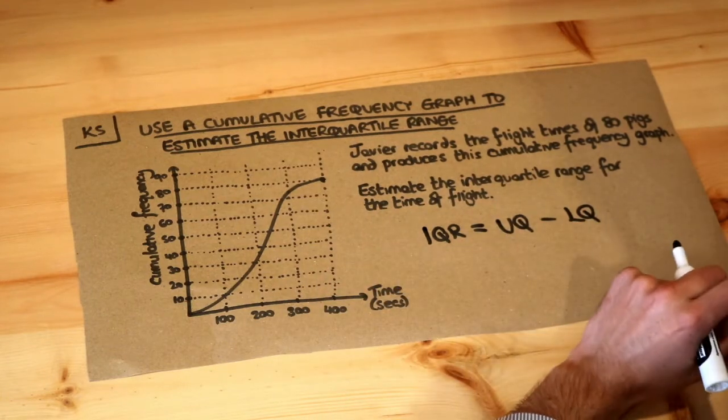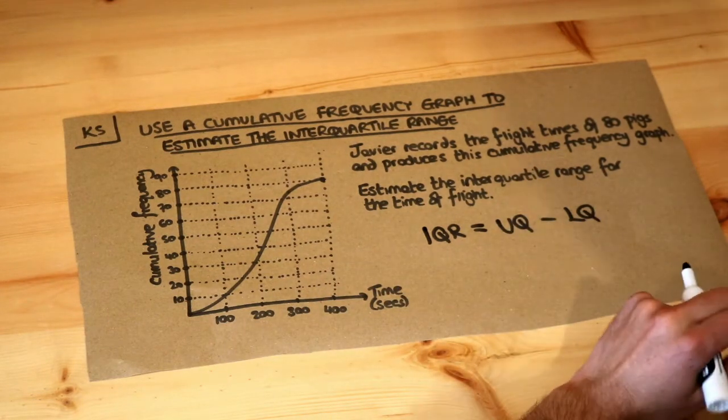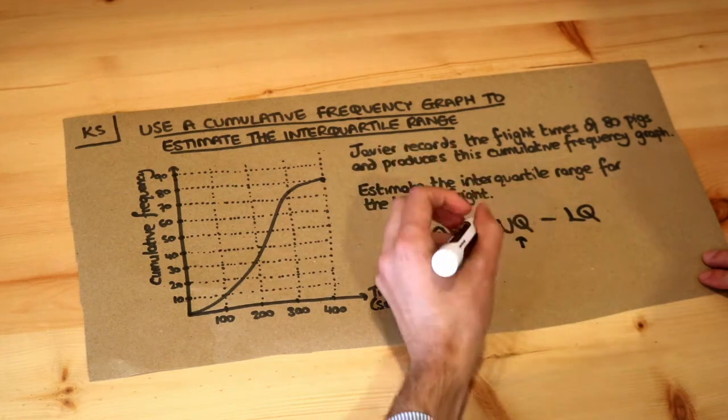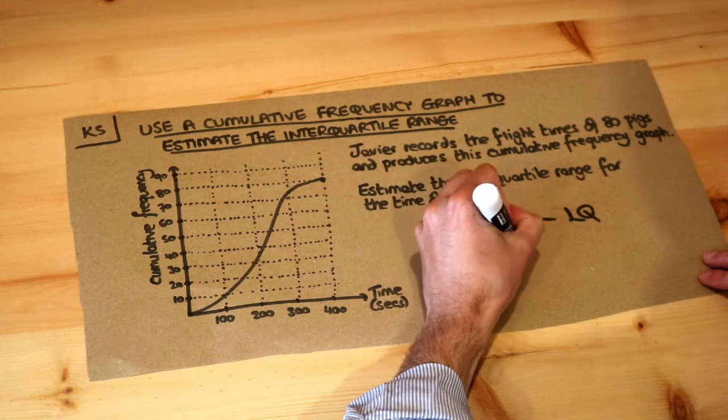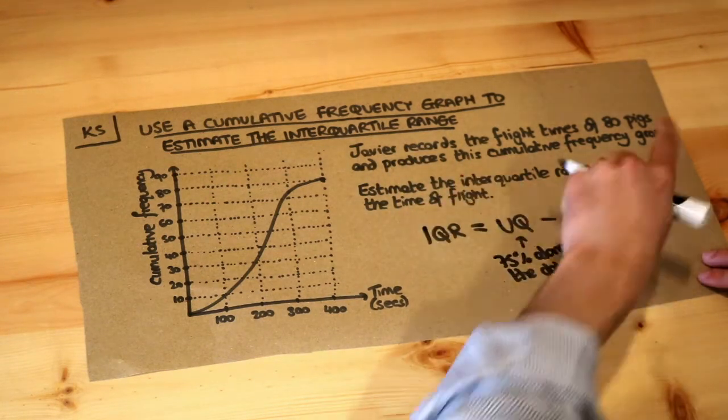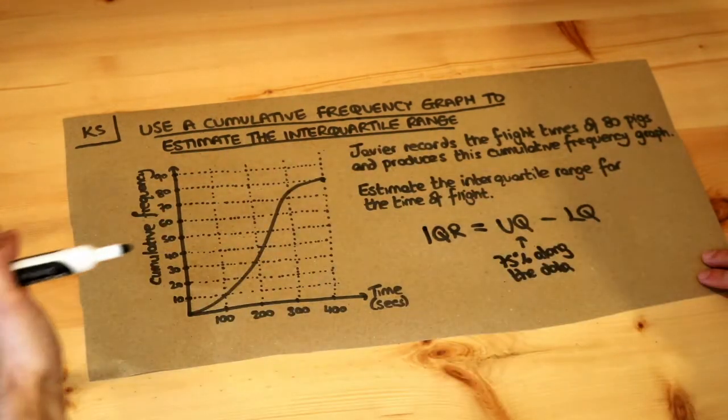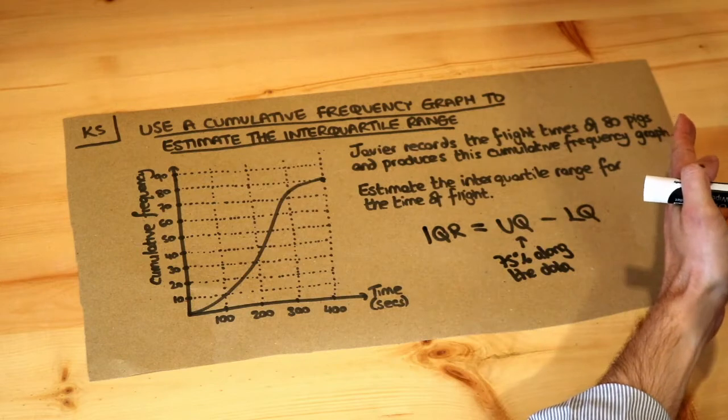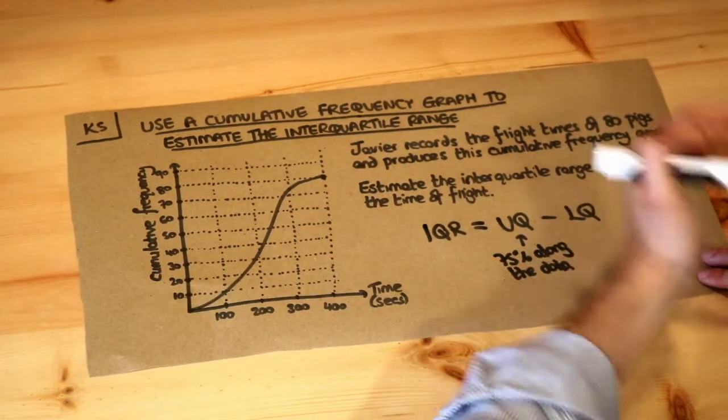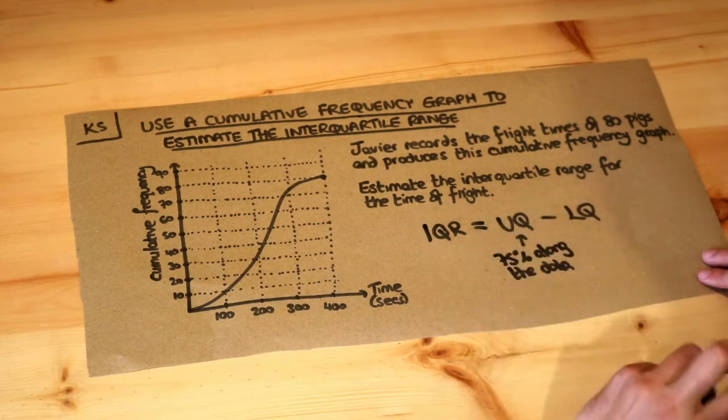And what are the upper quartile and lower quartile? We explored that in a previous video, but just to remind you, the upper quartile is 75% of the way along the data. So if we were to line up the 80 pigs in ascending order of their flight time and we went three quarters of the way along our list, so 75% along the way, and took that pig's flight time, that would be the upper quartile.